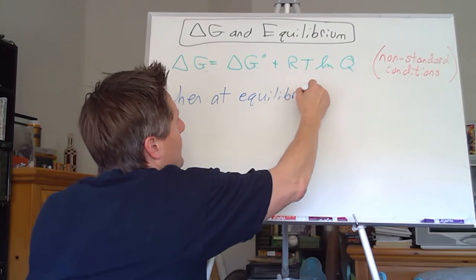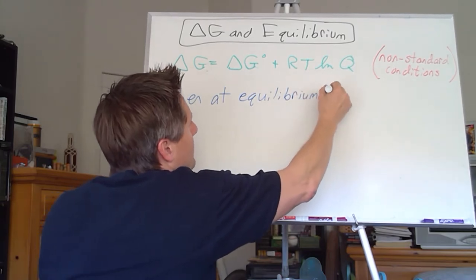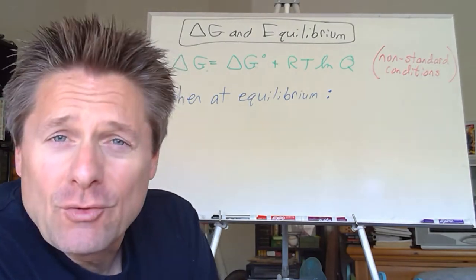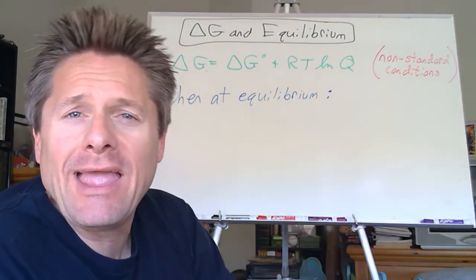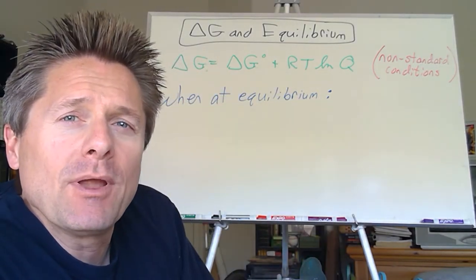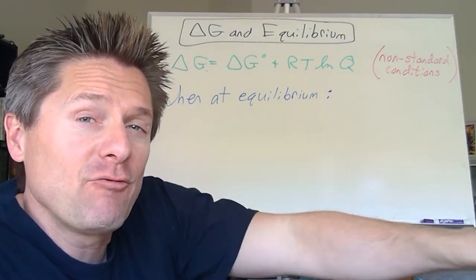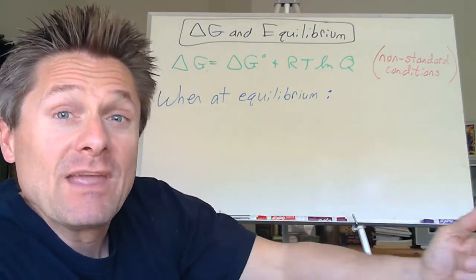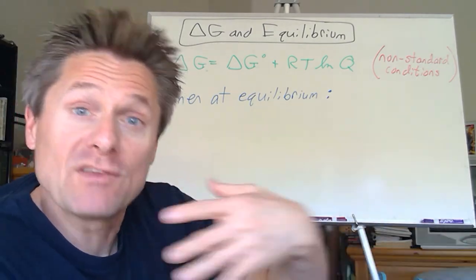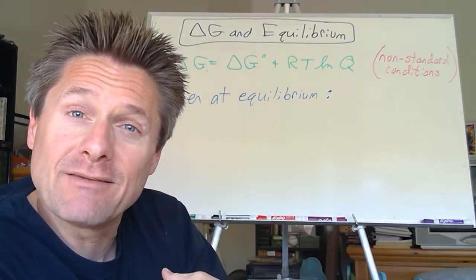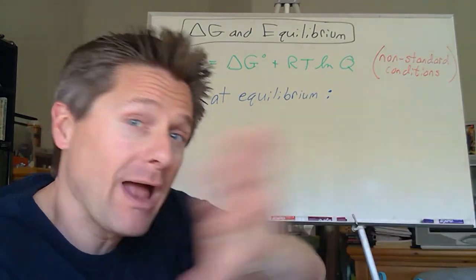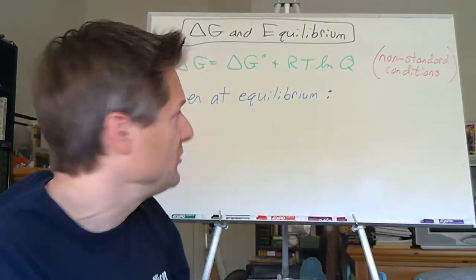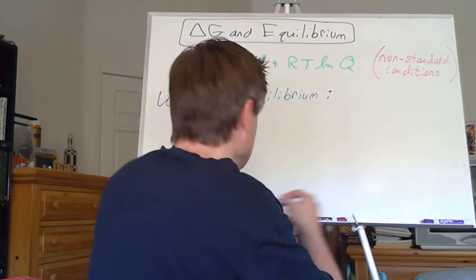Think about this: when we're at equilibrium, two of these things will change. What is the value for the Gibbs energy change at equilibrium? If it's spontaneous in the forward direction it's negative, if spontaneous in the reverse direction it's positive, but when we're at equilibrium there's no driving force either direction — delta G is zero.